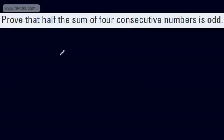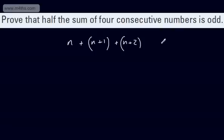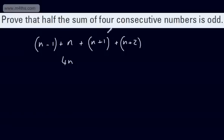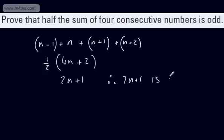We need to prove that half the sum of four consecutive numbers is odd. Looking at four consecutive numbers, my preferred choice is to write them as N minus 1, N, N plus 1, and N plus 2. Adding these together: N plus N plus N plus N gives 4N, and the minus 1 and plus 1 cancel, leaving 4N plus 2. We want half of this, so one half gives us 2N plus 1. Therefore, 2N plus 1 is an odd number.